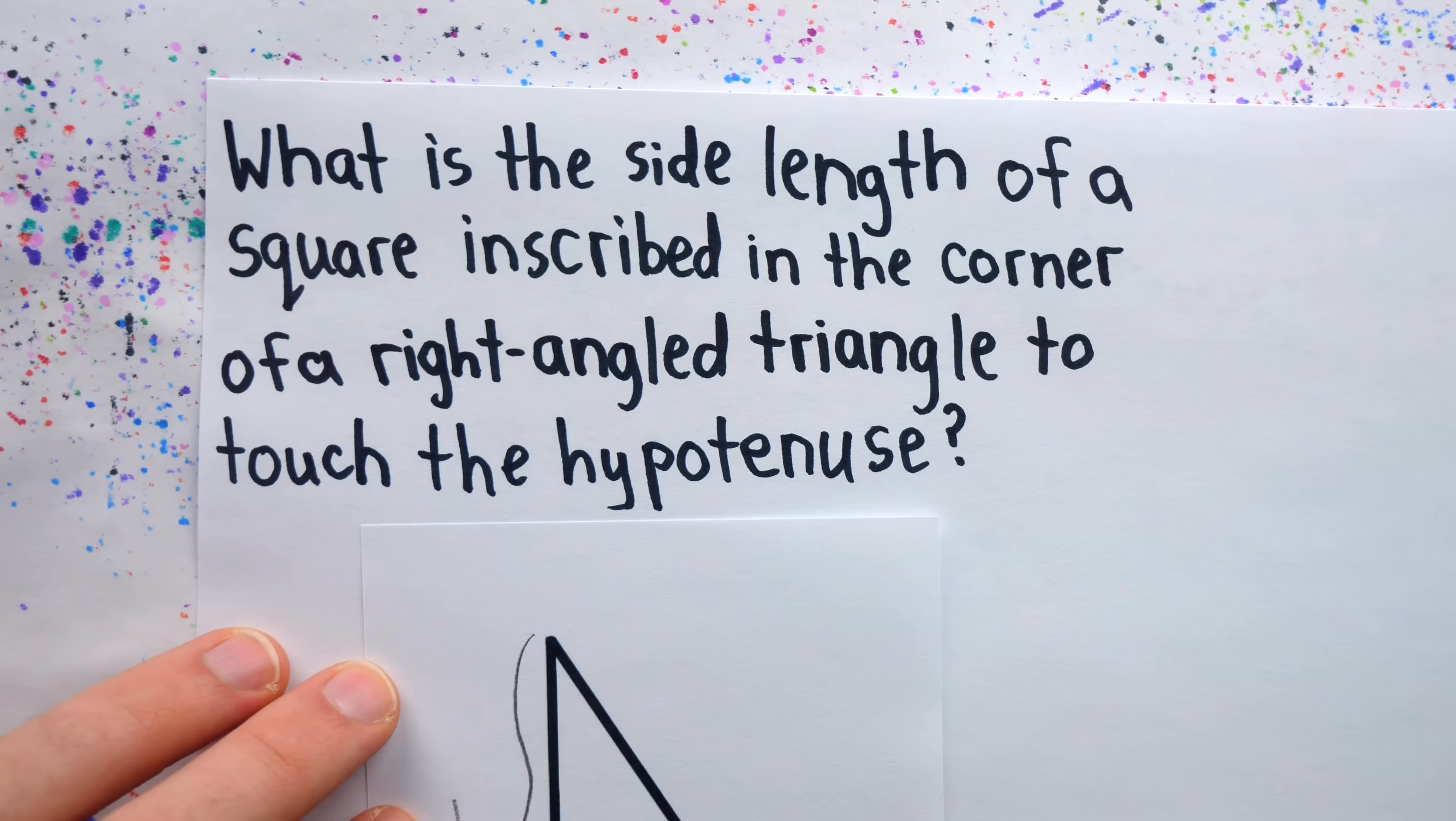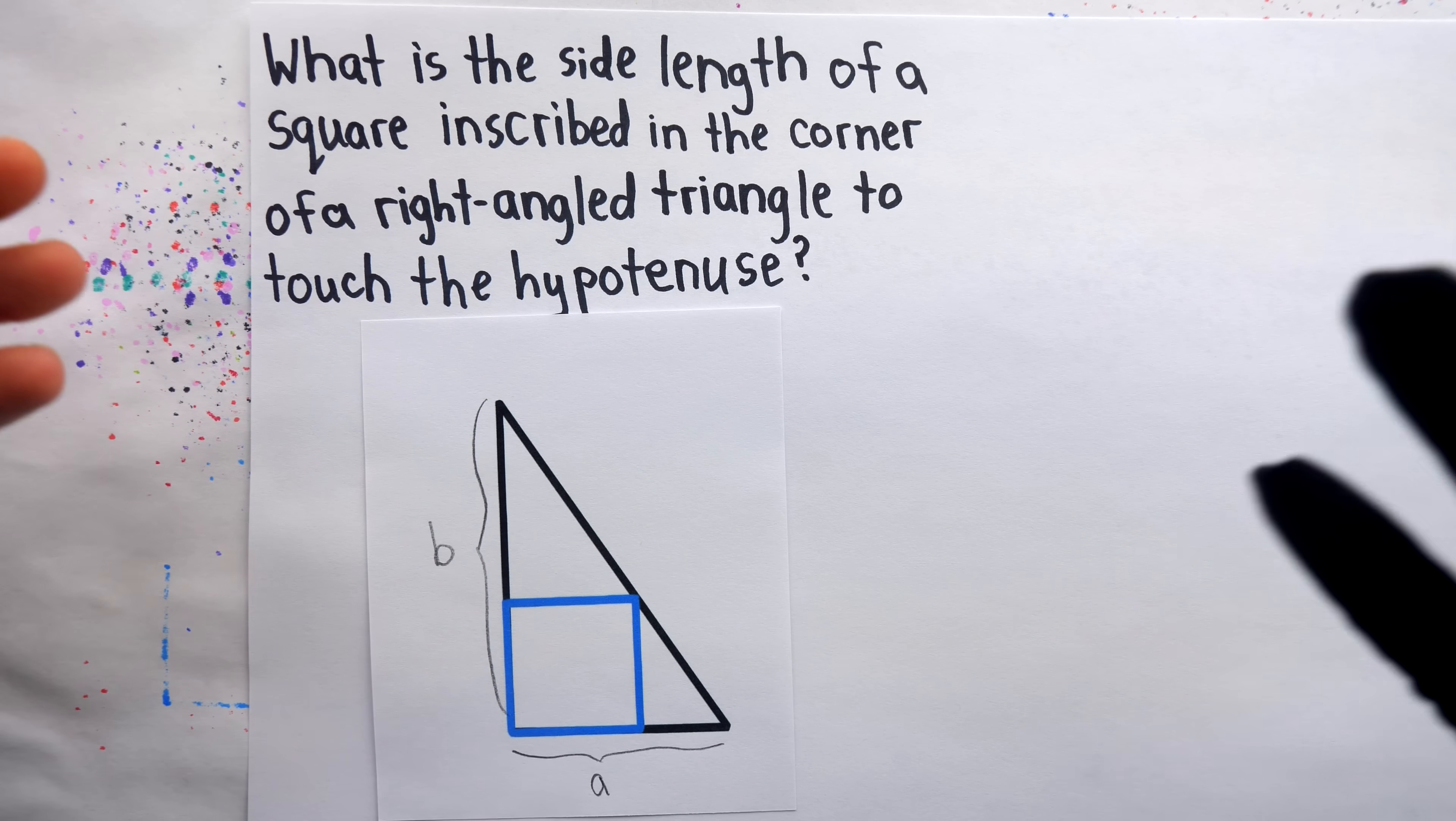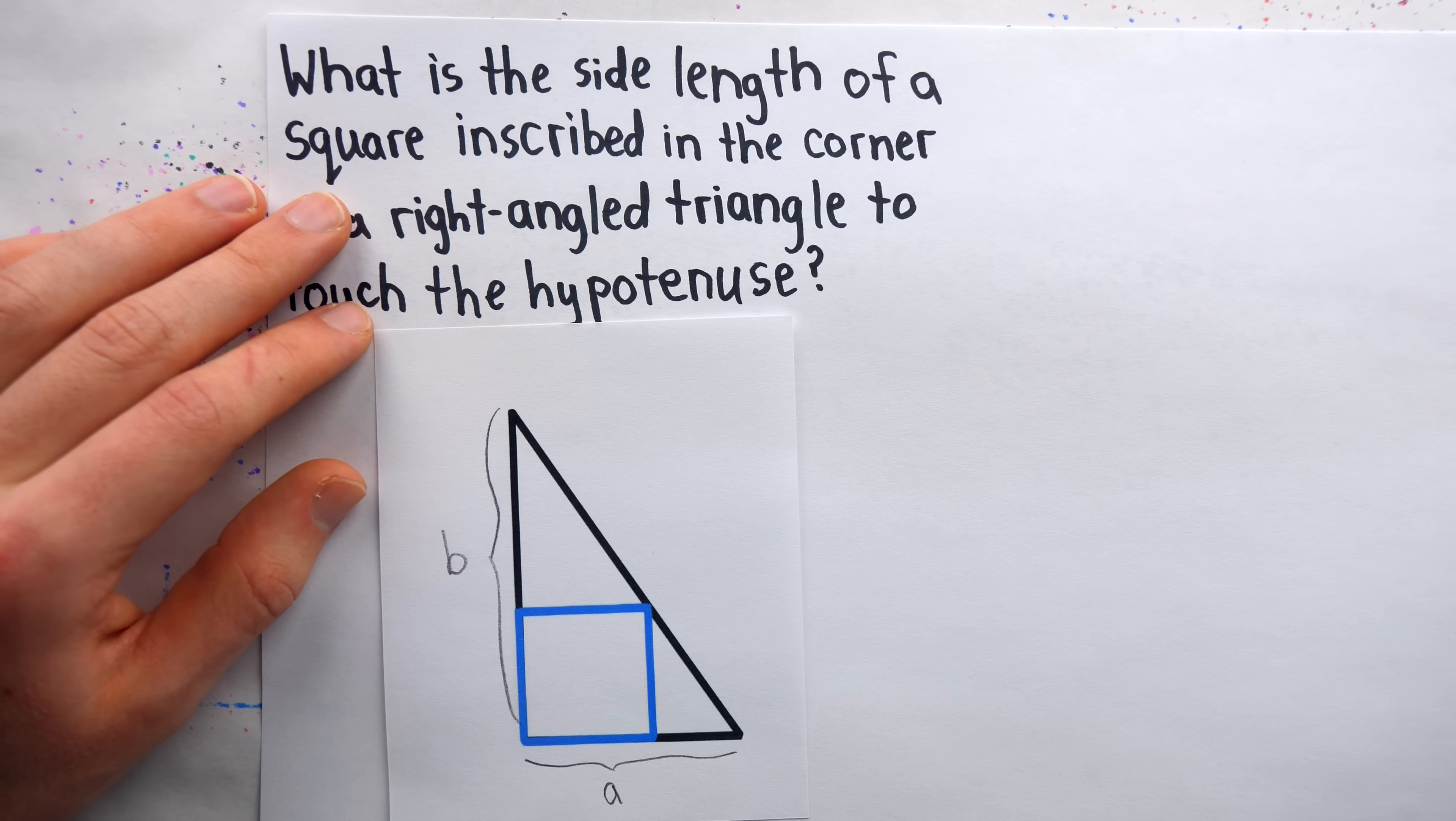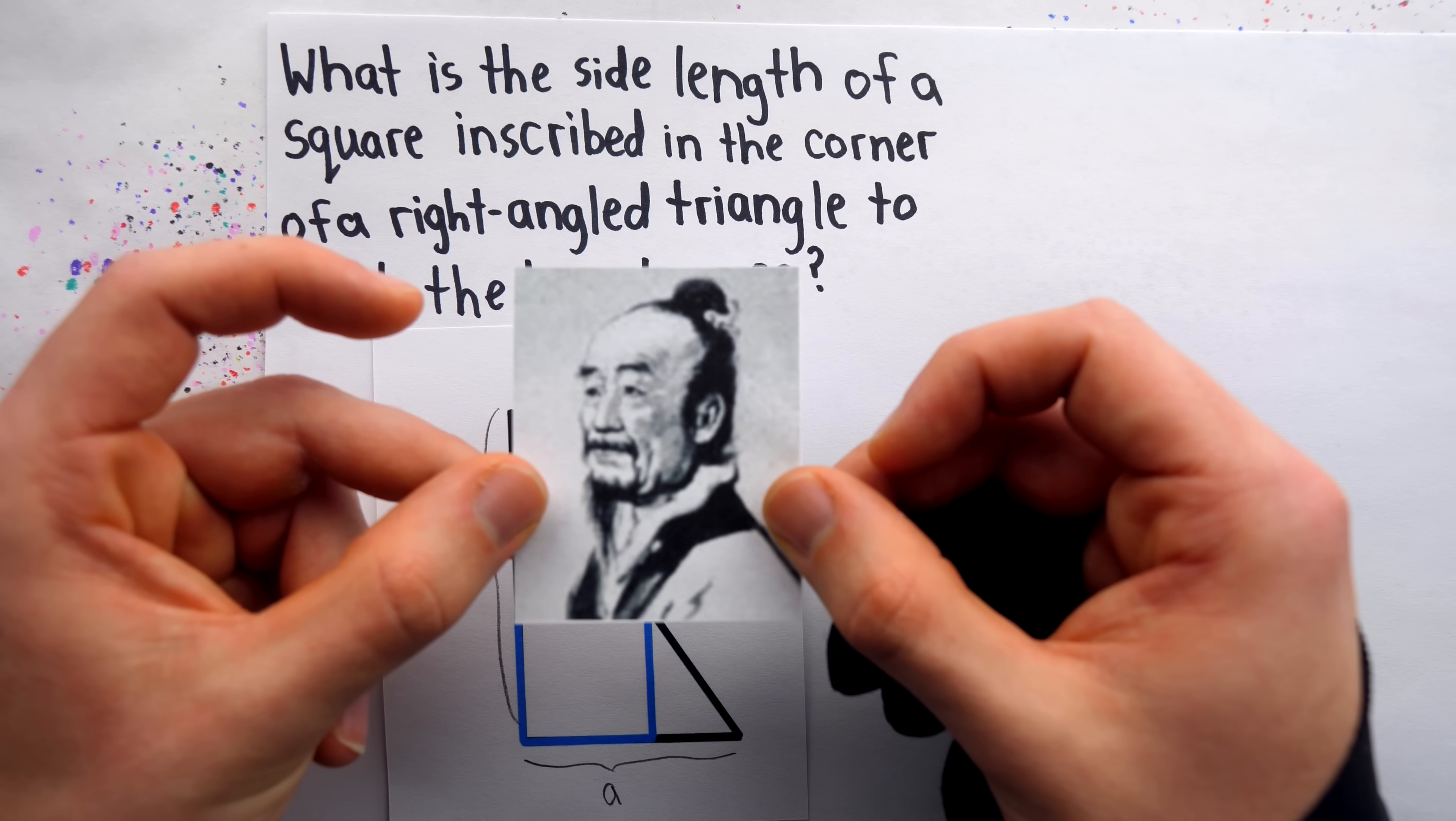The problem then asks us to determine the side length of this inscribed square. Now, if you'd like, you can pause the video and try to solve this nearly 1800-year-old Chinese math puzzle for yourself. But if you're ready, I'm going to go ahead and show you how Liu Hui solved it in his wonderfully written appendix.